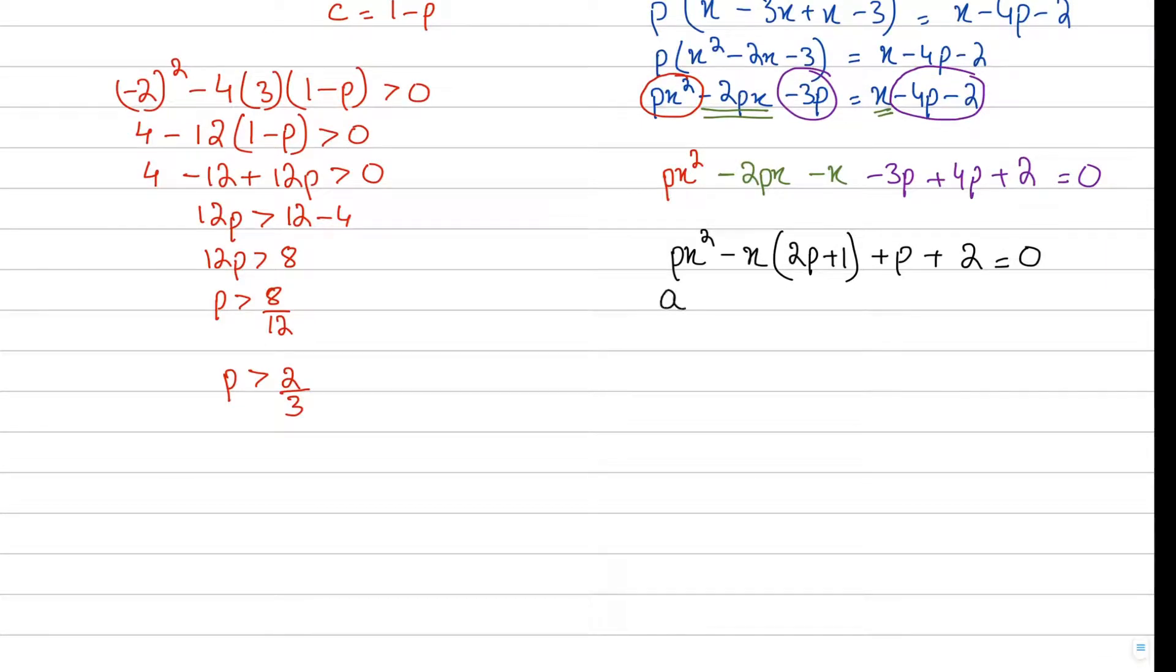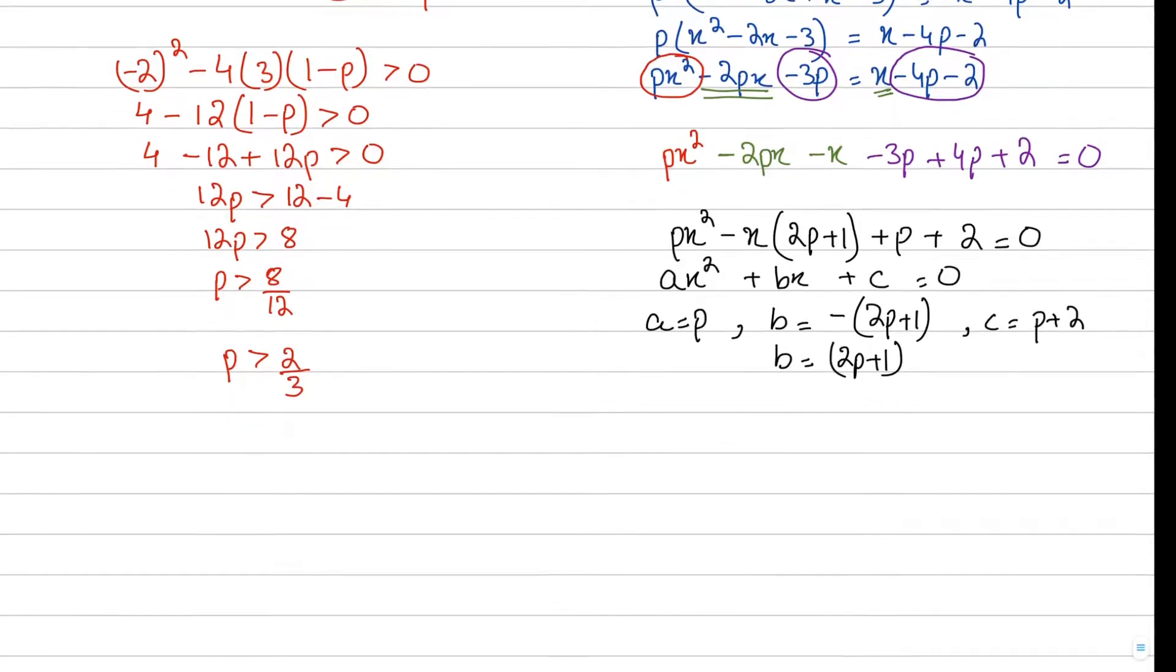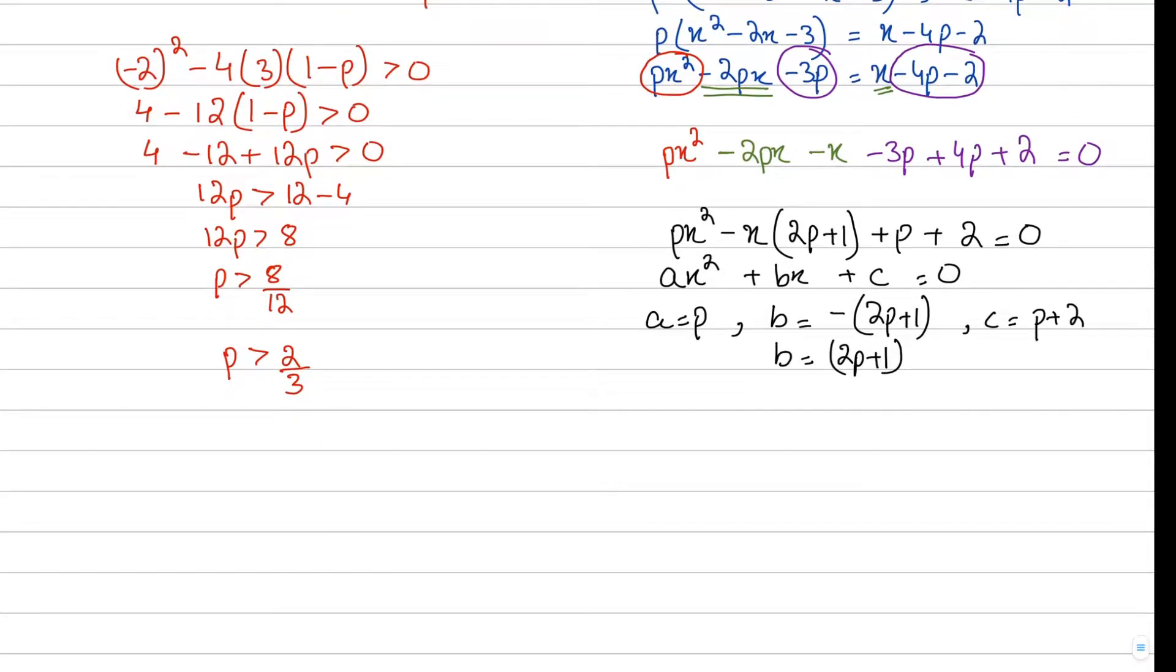Let's simplify and rewrite: px squared as it is, minus 2px minus x. Don't make the mistake - I can take minus x common, so I get 2p plus 1. And minus 3p plus 4p is plus p plus 2 equals zero. Now let's identify a, b, and c. If you compare, a equals p, b equals minus (2p plus 1) - I'll explain why shortly - and c equals p plus 2.